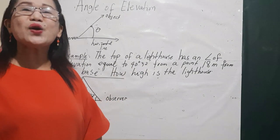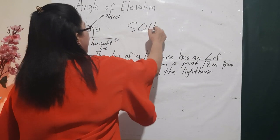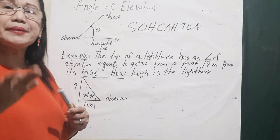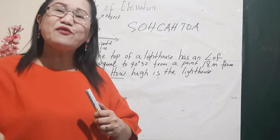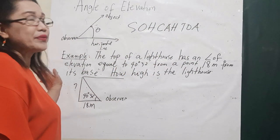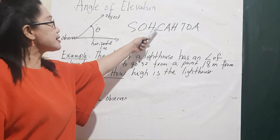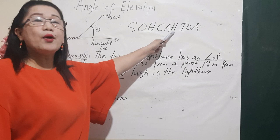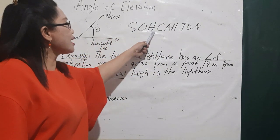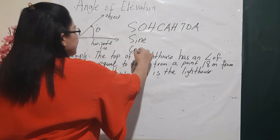To solve this, we use SOHCAHTOA. SOH means Sine equals Opposite over Hypotenuse; CAH means Cosine equals Adjacent over Hypotenuse; TOA means Tangent equals Opposite over Adjacent. Sine, cosine, and tangent are what we call the primary trigonometric functions, and we will be applying one of these in our problem.